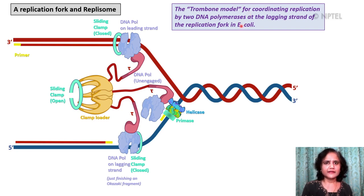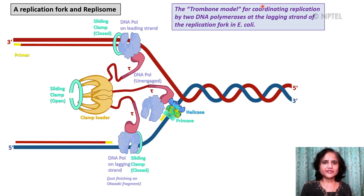Shown here is a replisome at the replication fork and an improved version of the trombone model for coordinating replication at the lagging strand. There is an active helicase on the lagging strand template moving in the 5' to 3' direction. Pol 3 holoenzyme interacts with the helicase via the tau subunit, and this interaction stimulates the rate of strand separation by the helicase such that DNA unwinding occurs at the same rate as replication by the DNA polymerase. If this association is absent, unwinding slows down by about 10-fold, and the polymerase can replicate faster than the helicase can unwind — thus the DNA polymerase can catch up with the helicase, forming the replisome.